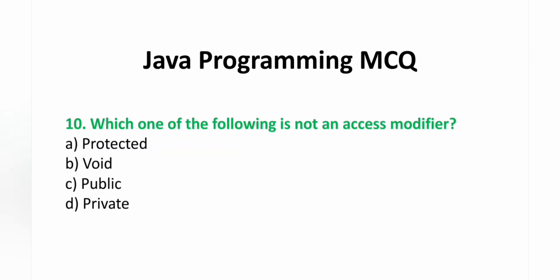10th, which of the following is not an access modifier? A. Protected  B. Void  C. Public  D. Private. Answer: B. Void.